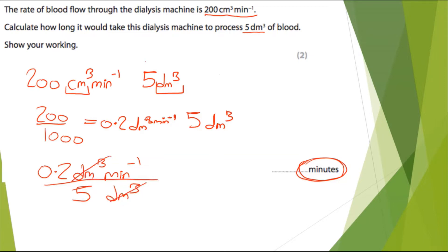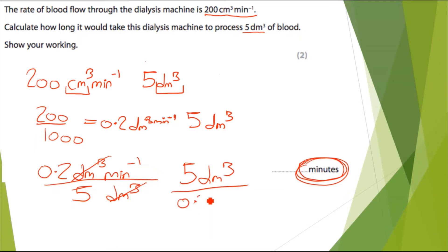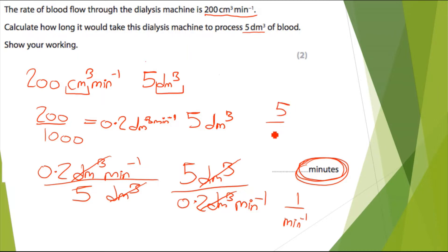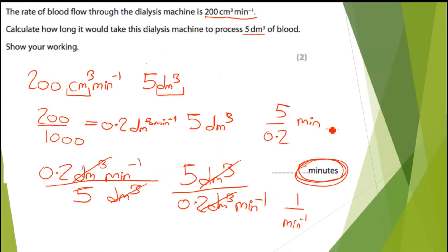The decimetres cubed cancel out, but then looking at the other unit left over, I have minute to the power of minus 1. It's asked me to give my final answer as minutes, not minute to the power of minus 1. So I know it should be the other way around — 5 decimetres cubed divided by 0.2 decimetres cubed per minute. I'm left with 1 over minute to the power of minus 1, which means the minute goes to the top. So it's 5 divided by 0.2, which gives me 25 minutes — that's my final answer.